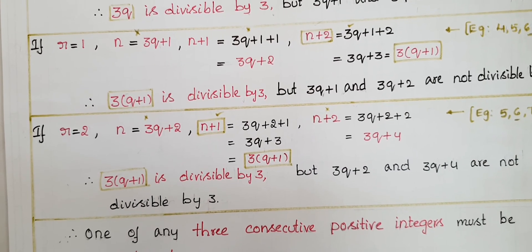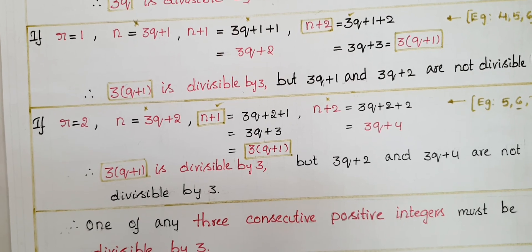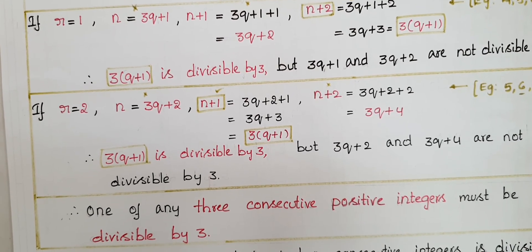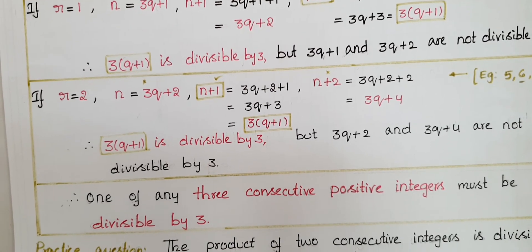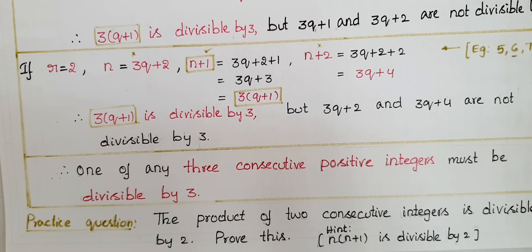Therefore, only one of any three consecutive positive integers must be divisible by 3. This completes the proof.